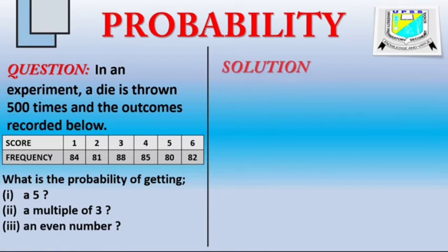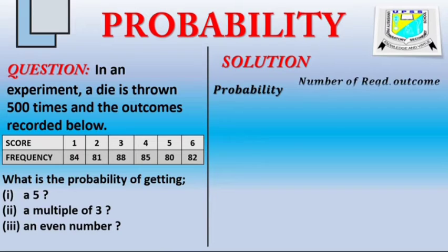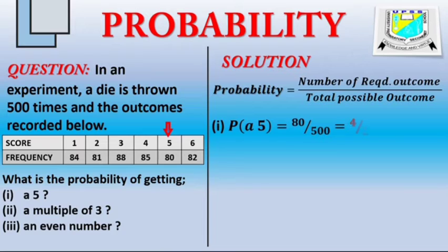But let's start with the probability of getting a 5. We've said before, the probability is the ratio of the required outcome to that of total possible outcome. In this case, the number 5 is thrown a total of 80 times. So that tells us that the probability of getting a 5 is 80 over 500. This can be broken down to 4 over 25.